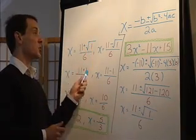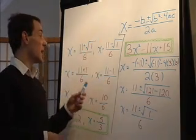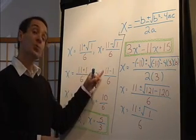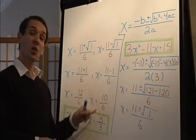The square root of 1 is 1. The square root of 1 is 1. On this one, we're going to add those two, giving us 12 over 6. On this one, we're going to subtract those two, giving us 10 over 6.